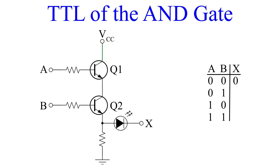Next, we apply an input to B. Q2 has a bias voltage on its base, but because there is no collector current, the transistor is off. So once again, the output is zero. For inputs A equals zero and B equals one, the output is zero.